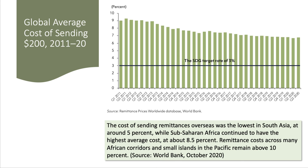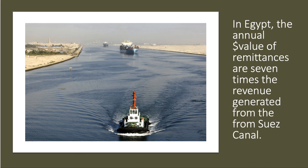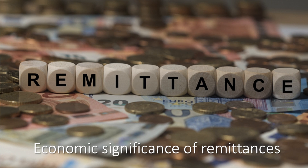The global average cost of sending remittances has come down, but remains well above the 3% SDG target, with the latest data showing 8–9% — a figure many find morally repugnant. To illustrate the significance: in Mexico, the annual value of remittances is greater than the value of oil exports; for Egypt, the dollar value of remittances is seven times the revenue from shipping using the Suez Canal. For many countries, remittances are a very significant part of the growth and development story.